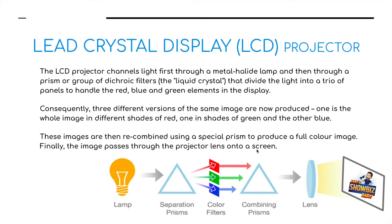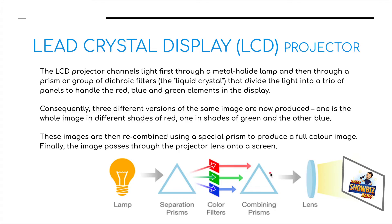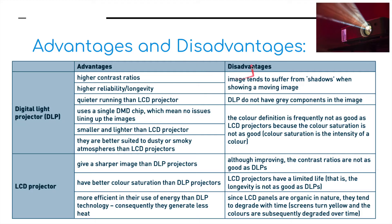The LCD projector channels light first through a metal-halide lamp and then through a prism or group of filters known as liquid crystals, which divide the light into a trio of panels to handle the red, green, and blue elements of the display. Three different versions of the same image are produced: one in different shades of red, one in different shades of green, and one in different shades of blue. These images are then recombined using a combining prism to produce a full color image, which is finally passed through a lens to be focused and displayed on a screen. The advantages and disadvantages are shown in the table — please pause the video to look at this in more detail.